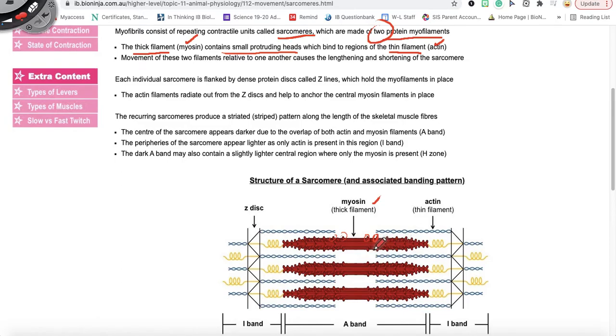Now it is because it has these heads that it is able to bind to regions of actin which is the thin filament, and notice how it's much thinner than myosin which is that thick filament.